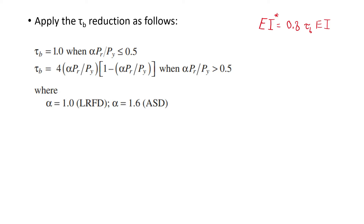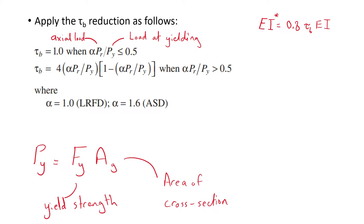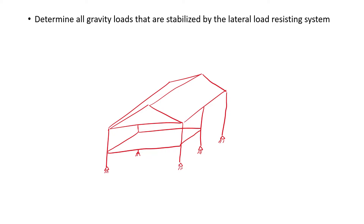The tau_b factor is applied as follows: when alpha × Pr over Py is less than or equal to 0.5, tau_b equals 1. But when alpha × Pr over Py is greater than 0.5, tau_b is less than 1. Py can be found by multiplying the yield strength by the cross-sectional area.